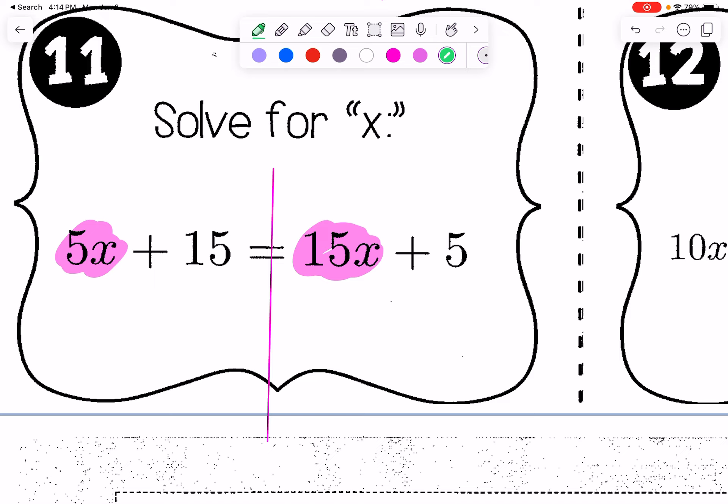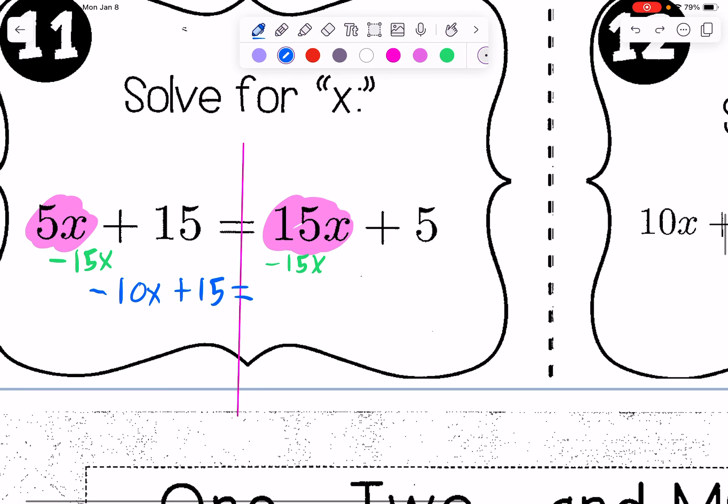We've been practicing getting them on the left. You can get them on the left or the right, but I'll just get them on the left. So I need to do a balanced move to get negative 15x off of the right side. So we use the inverse operation. So we're left with negative 10x plus 15. That's what happens when we combine 5x minus 15x, subtract 15x, end with negative 10. All of this equals 5.